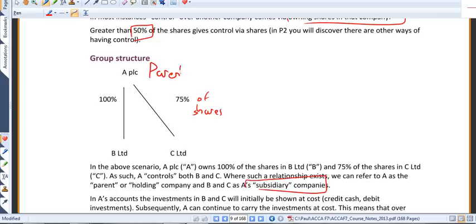A is often referred to as the parent, or some people call it the holding company. But both B and C are referred to as subsidiaries.